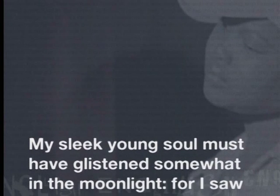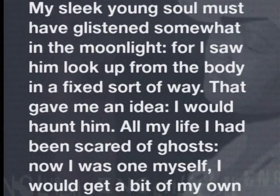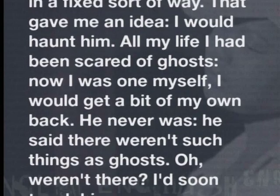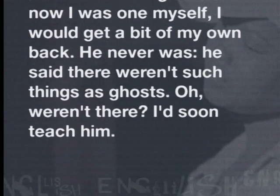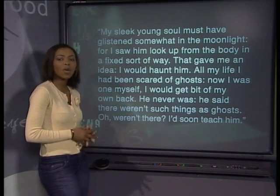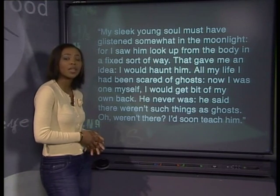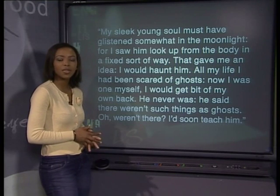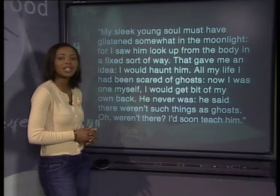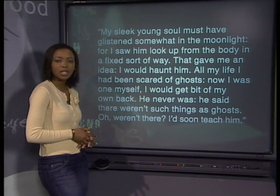Here is the second paragraph: 'My sleek young soul must have glistened somewhat in the moonlight, for I saw him look up from the body in a fixed sort of way. That gave me an idea — I would haunt him. All my life I'd been scared of ghosts, and now I was one myself. I could get a bit of my own back. He never was — he said there weren't such things as ghosts. Oh, weren't there? Soon I'd teach him.' From what she says about herself, her lover, and her plans, we can determine that she regrets her life being lost over the fuss she made. When she was alive, she was superstitious and frightened of the supernatural. She wants revenge — she has been hurt and wants to get back at her husband, planning to terrify the man and make his life miserable.